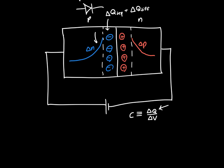So the total capacitance for a P-N junction diode is just the depletion capacitance, or the junction capacitance, plus the diffusion capacitance, Cd.